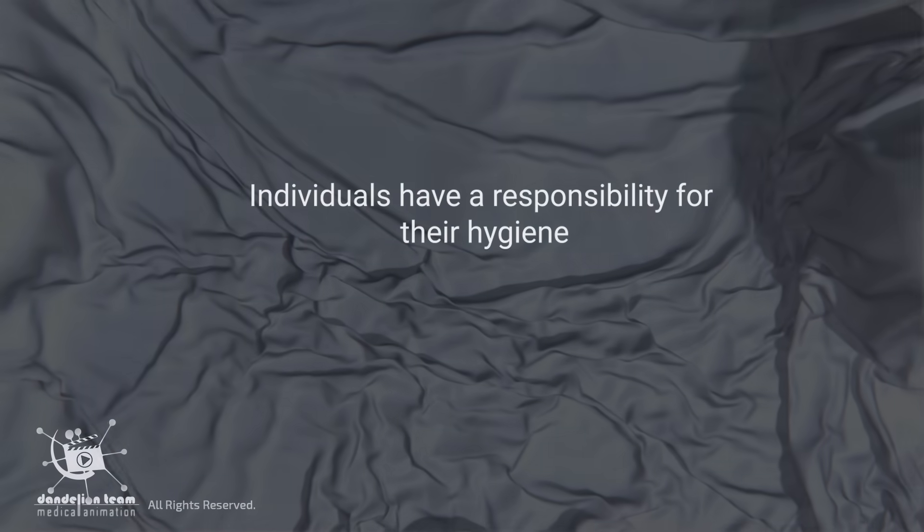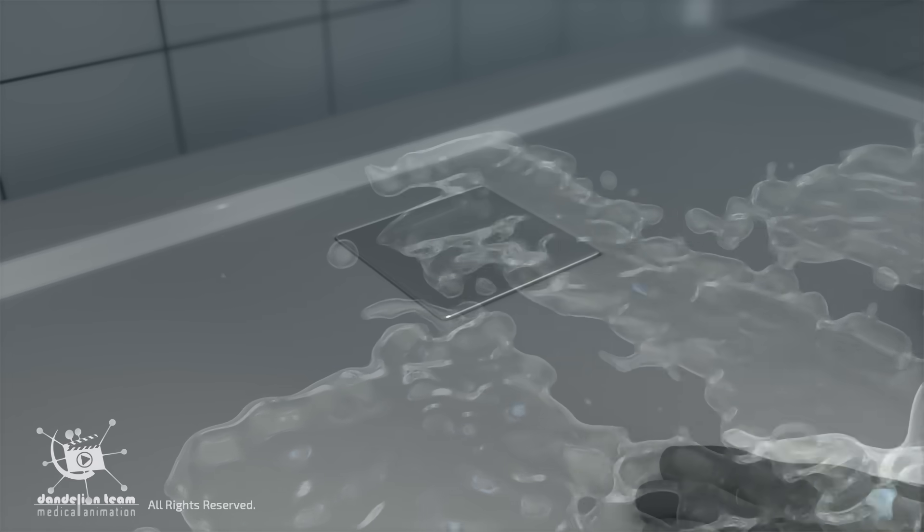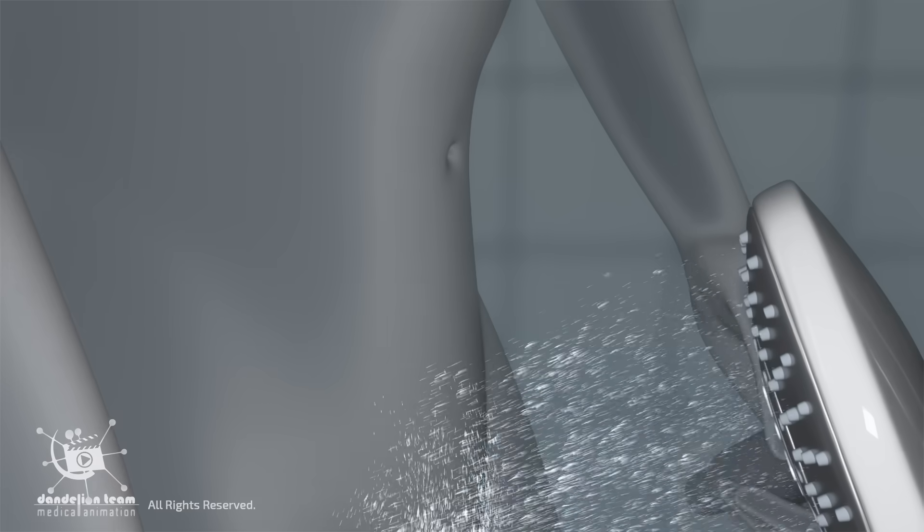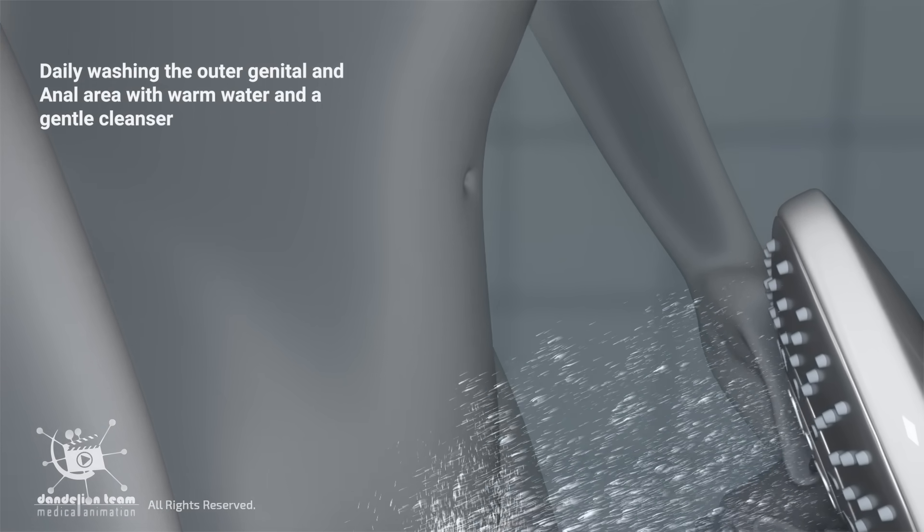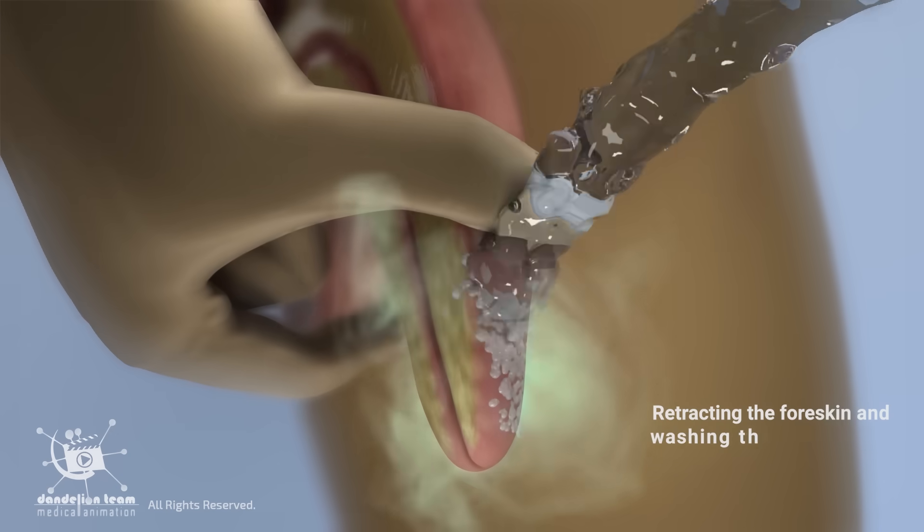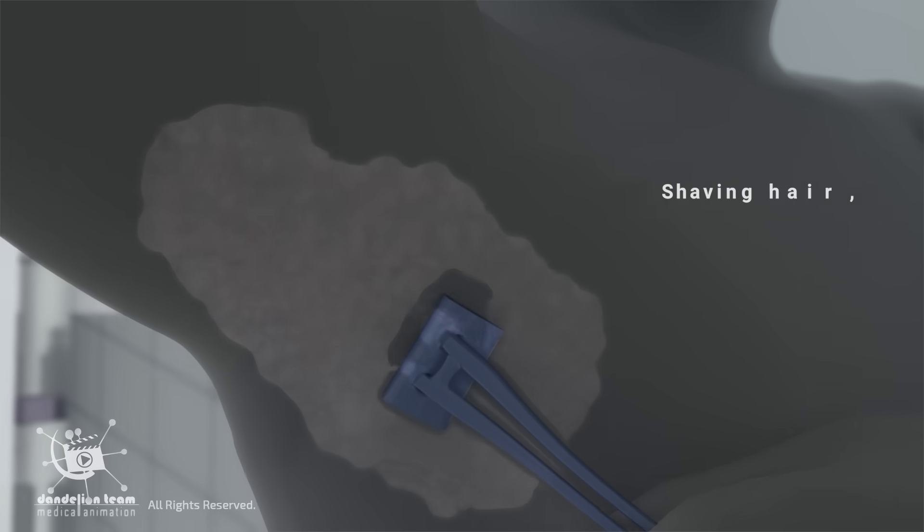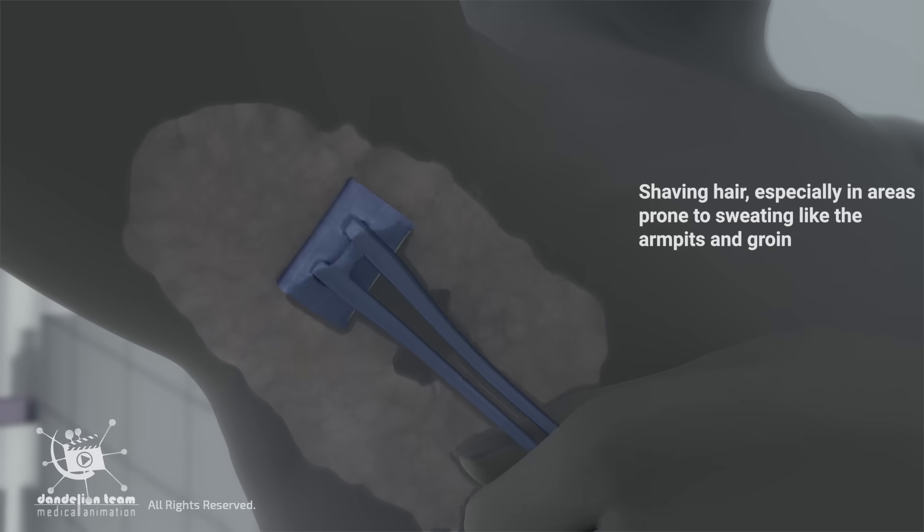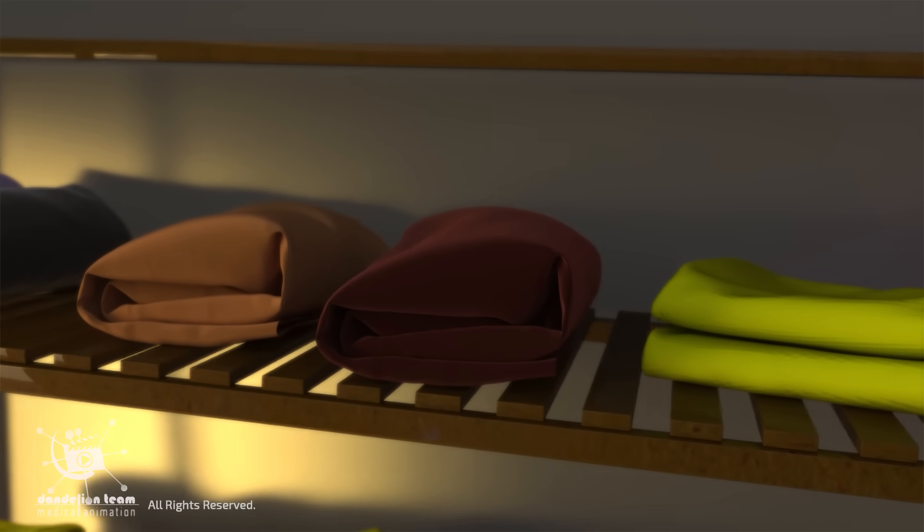Individuals have a responsibility for their hygiene. Regular showering, daily washing of the outer genital and anal area with warm water and a gentle cleanser, and then drying thoroughly. Retracting the foreskin and washing the head of the penis. Shaving hair, especially in areas prone to sweating like the armpits and groin, and wearing clean clothes are all important aspects of hygiene.